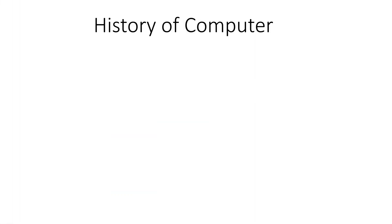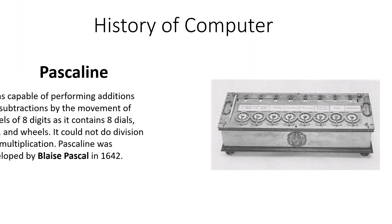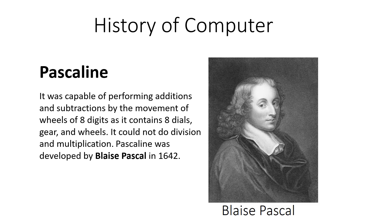Pascaline is another calculating device. It was capable of performing additions and subtractions by the movement of wheels of eight digits. As it contains eight dials, gears and wheels — as you can see on the image — it could not do division and multiplication. It was only able to perform additions and subtractions, and it was developed by Blaise Pascal in 1642.